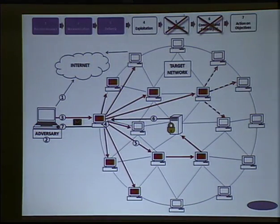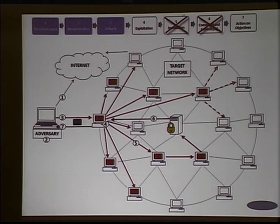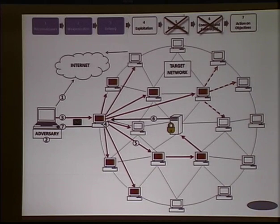This slide talks about the kill chain. You want to disrupt the attacker early on to stop them or at least get a chance at fighting. What we've talked about today is disrupting the installation component of this chain. AppLocker will stop execution — it won't necessarily stop the download, but it will stop it from executing. The command-and-control part is addressed with host-based firewalls — you're stopping the downloader from reaching back out to the command and control.